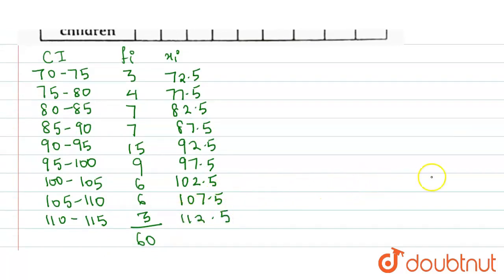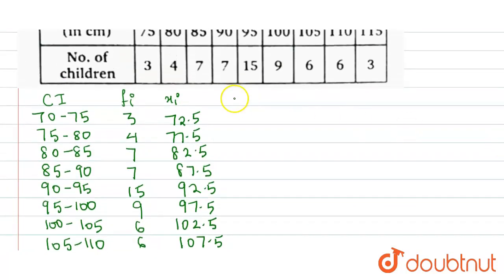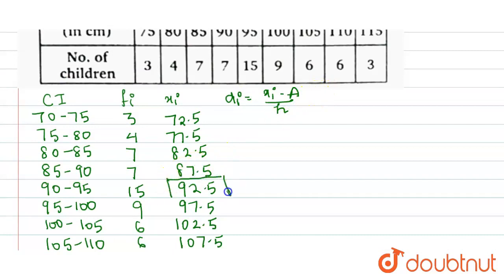Now let us calculate the values using the shortcut method. We need to calculate the value of dᵢ using the formula: dᵢ = (xᵢ − assumed mean) / h, where the assumed mean is 92.5 and h is the class size, which is the difference between class intervals, equal to 5.